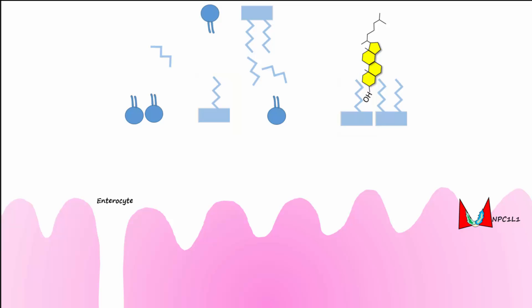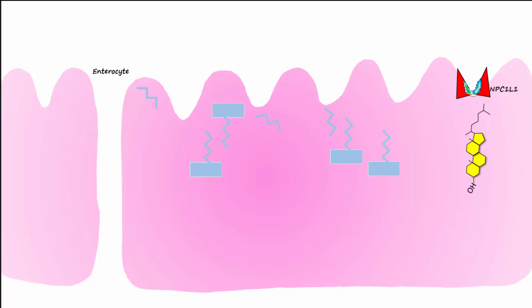The micelle will dissociate and the monoglycerides and free fatty acids will enter the enterocytes of the small intestine by simple diffusion. Lipases will continue to act on diglycerides and break them apart into monoglycerides and free fatty acids that can be absorbed into the enterocyte. Cholesterol will also enter into the enterocytes but through a special transporter called NPC1L1.